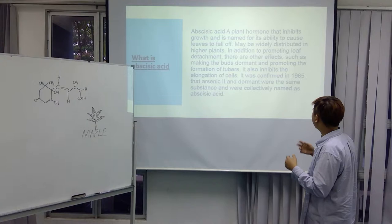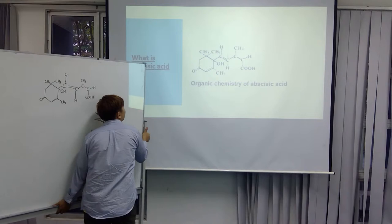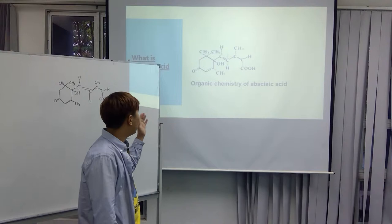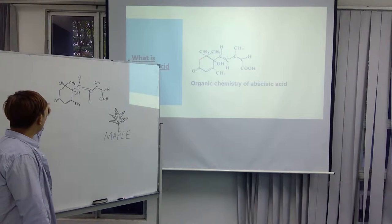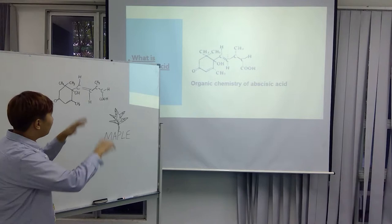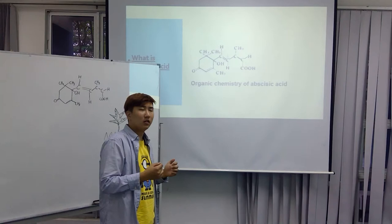Let's continue to the next stage. This is the organic chemistry of abscisic acid. And this is my drawing. So you see there are the O, CH3, H3, and so many things to make a complex organic chemistry. It's from the plants to make it.